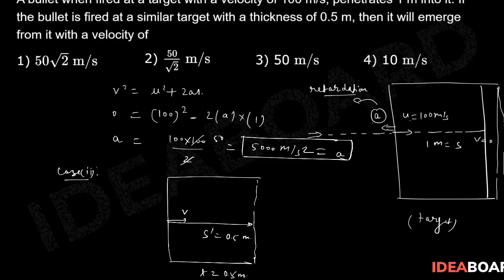So initially the velocity is U = 100 meter per second. We already calculated the value of retardation. From here, let's say it comes outside with velocity V. So we want to gain that velocity V only.